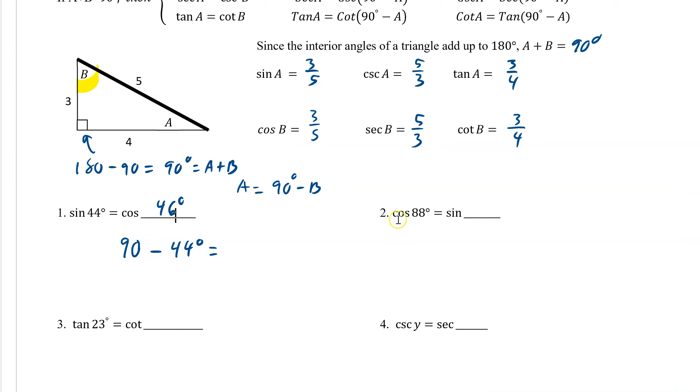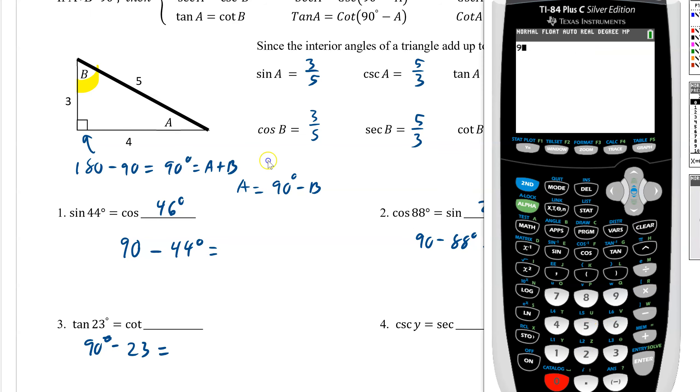It's all you have to do with each one, as long as it's a cofunction. So this would be 90 minus 88. So that's 2. 23 and 90 take away 23, so 90 minus 23. It's all calculator, 67 degrees.